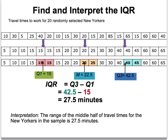Let's look at an example using the same New Yorkers commute data. The median was 22.5, halfway between the 10th and 11th data points when set in order. We have 10 data points to the left, so Q1 is halfway between the 5th and 6th values — both happen to be 15 — so the first quartile is 15. To find Q3, we find the halfway point between the 15th and 16th data points, representing the second half of the data. That's halfway between 40 and 45, which is 42.5.